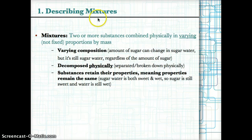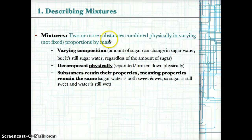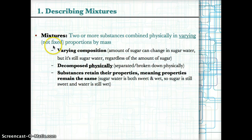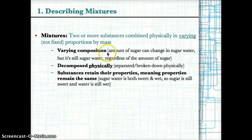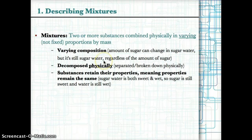Let's first talk about how to describe a mixture. As you should know from unit 1, mixtures contain two or more substances combined physically in varying — meaning changing or not fixed — proportions by mass. This means the amount of substances in terms of mass can change. For example, the amount of sugar can change in sugar water, but it's still sugar water regardless of the amount of sugar and water.